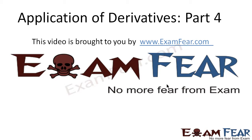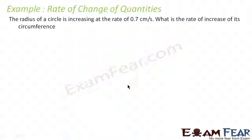Hello friends, this video on application of derivatives part 4 is brought to you by examfear.com — no more fear from exam. Before watching this video, please make sure that you have watched part 1 to part 3. Let's take one more example. It says: the radius of a circle is increasing at the rate of 0.7 cm per second. What is the rate of increase of its circumference?